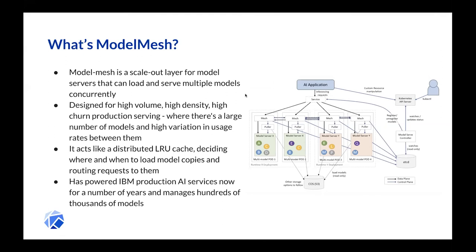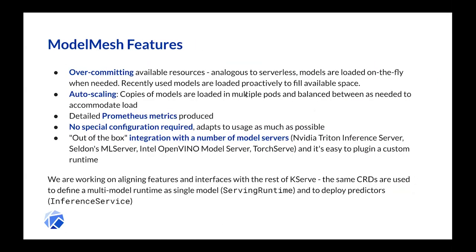Model Mesh is useful when you have far more models than you want to serve at a given time. It has serverless-type functionality — instead of spinning up pods, it dynamically loads models within existing pods when needed, keeping the most recently used ones loaded. In production, maybe only 10% of models are loaded at a time, but it manages this automatically. It optimizes footprint and auto-scales across pools without configuration, loading copies of heavily-used models across multiple pods and balancing between them, while evicting less-used ones.